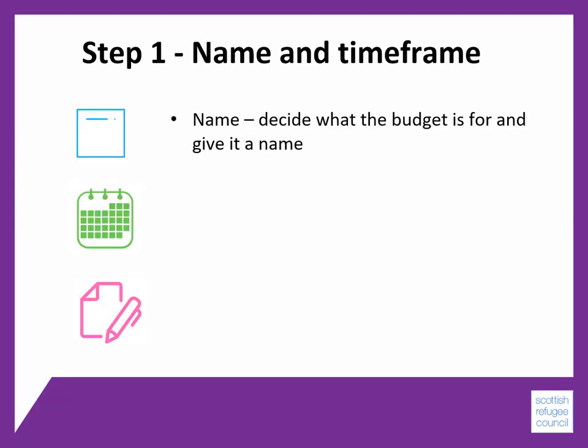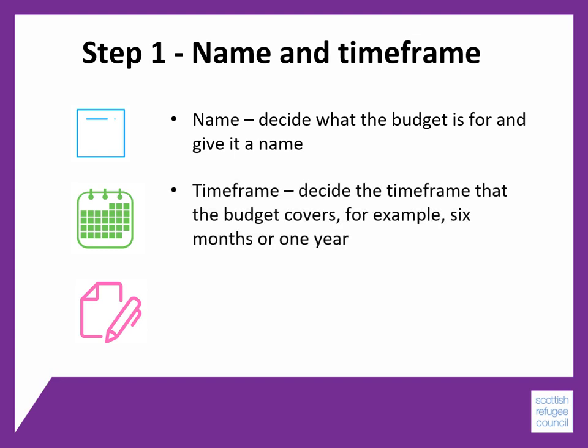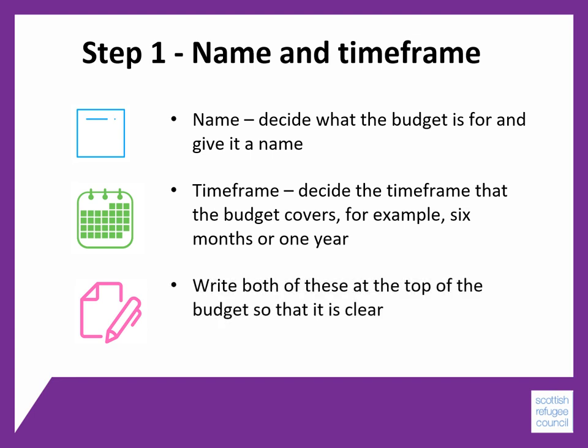Step 1. Decide what you're making the budget for and give the budget a name, for example, organisational budget or women's group budget. Decide the timeframe that the budget covers, for example, is it for six months or is it for a year? Now write both of these at the top of the budget so that it is clear for you and for anyone else who reads it.